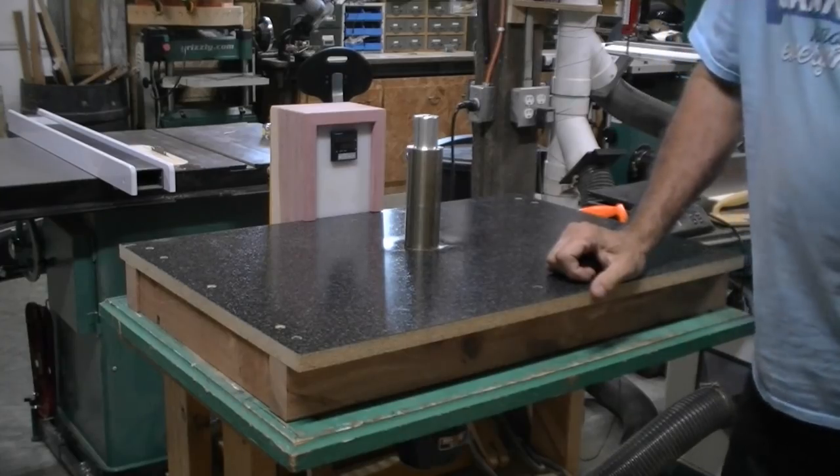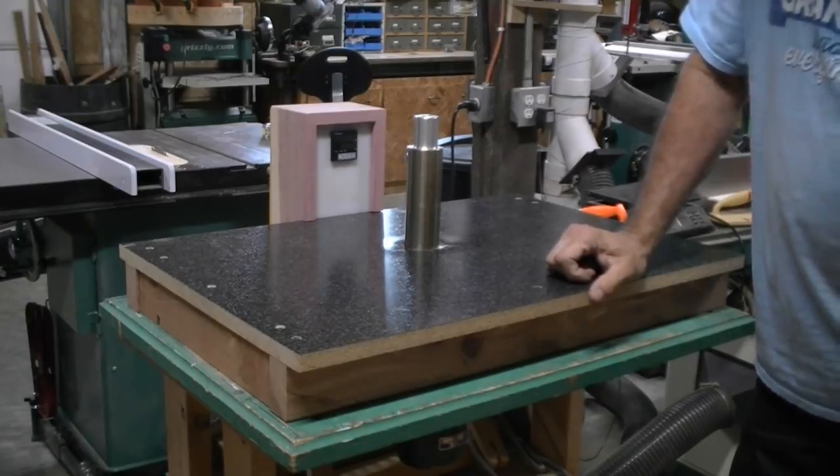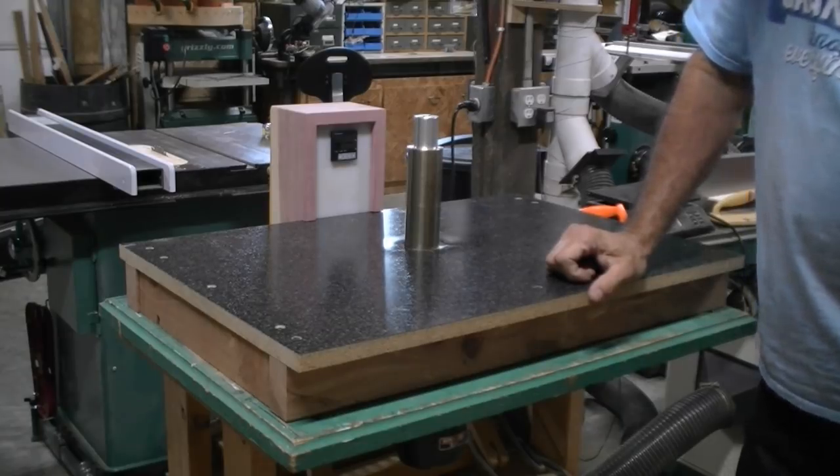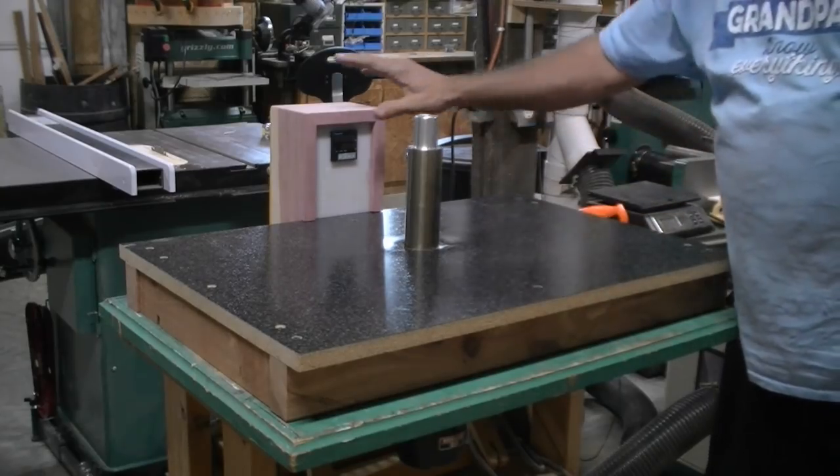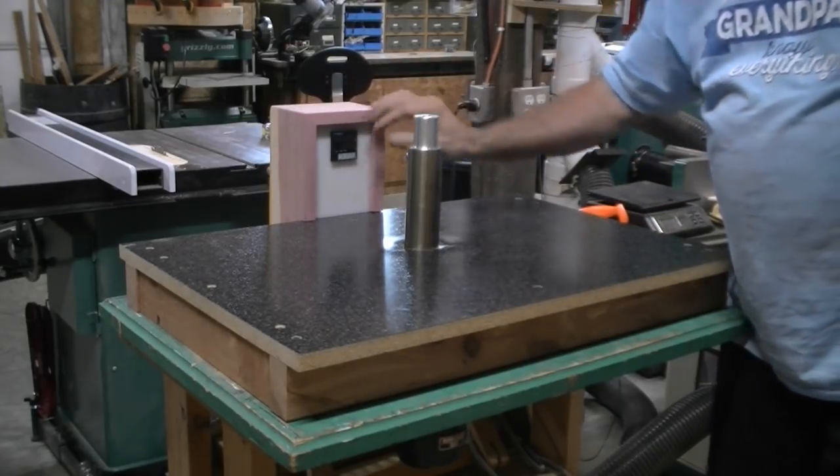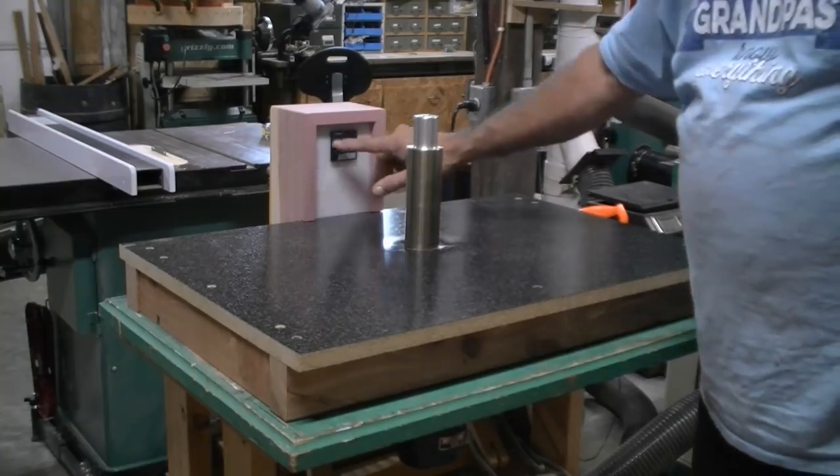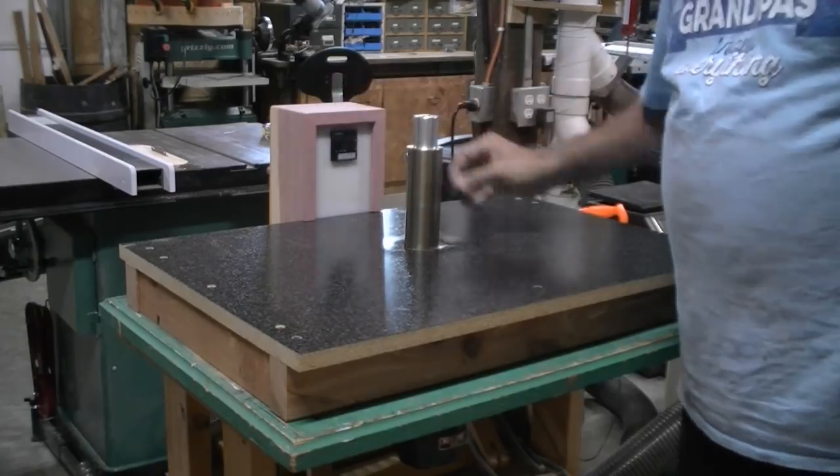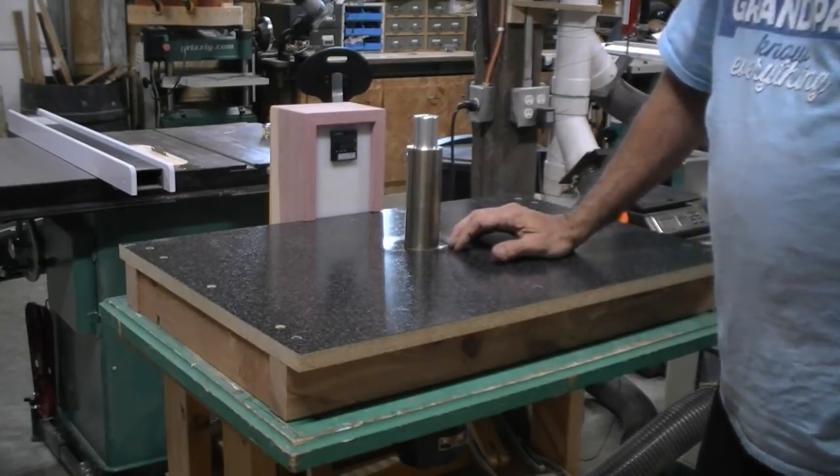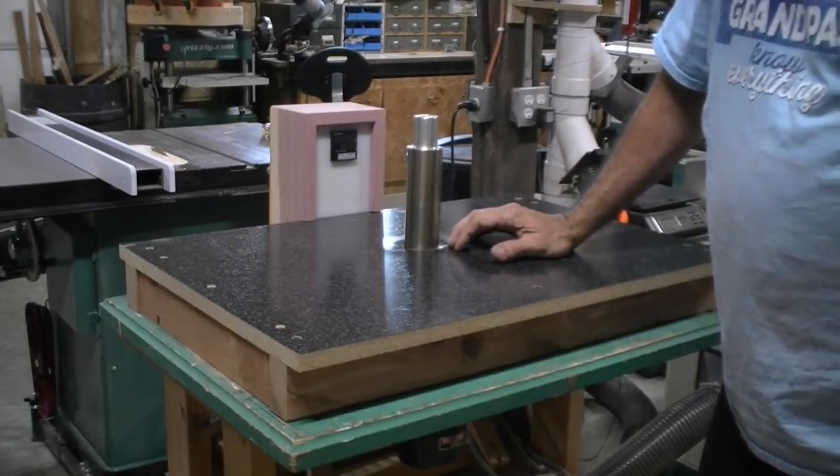This is the current state of the union here in terms of my side bender. It's not a whole lot different than the last time you saw it except for the fact that I've added this box here and you can see the controller on the front. Before I power it up and get it hot, I wanted to show you how I put it together. It might help somebody down the road.